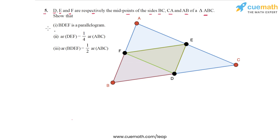We have joined them, and here's what we have to show. We have to show that the quadrilateral BDEF is a parallelogram. We have to show that the area of triangle DEF — this small triangle in the middle — is one-fourth the area of triangle ABC, and we have to show that the area of BDEF is half the area of ABC.